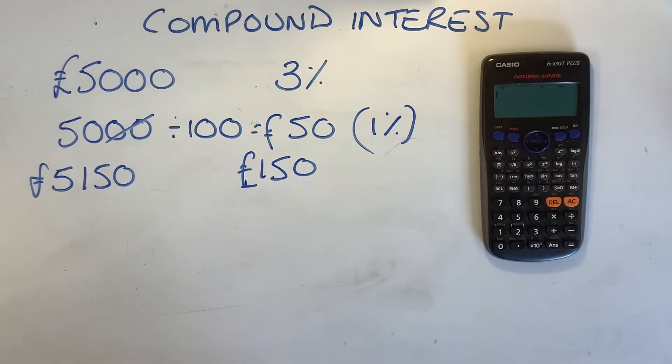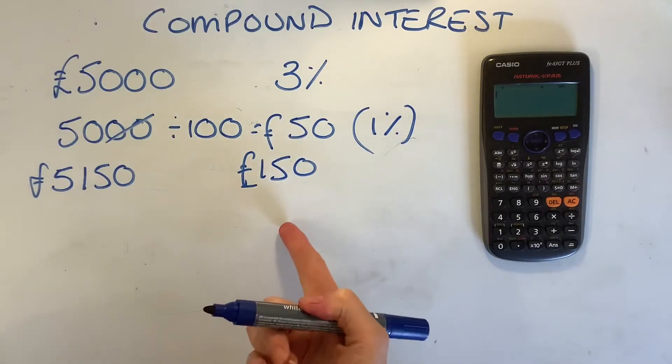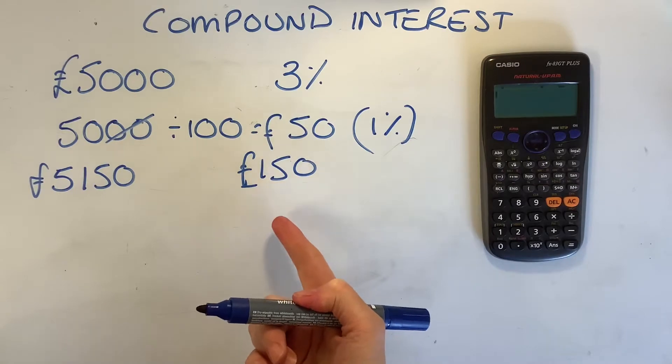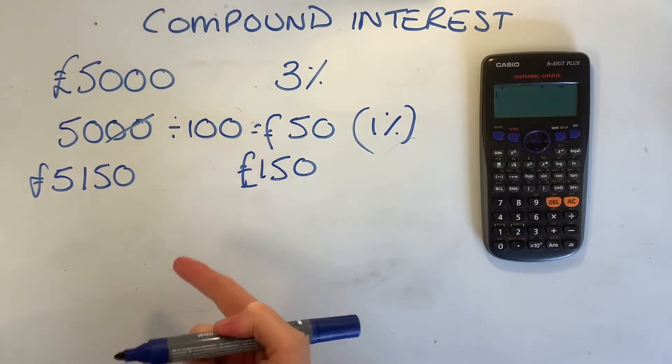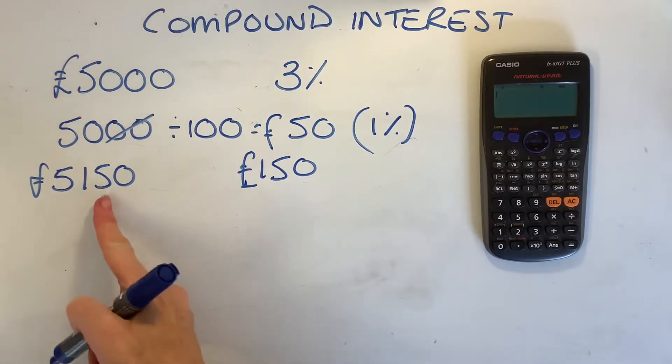It might ask you, though, to give the compound interest for two years. We have to work it out, this method, like we've done here, and then do the same for a second year. I need to find my 3% again. Well, first of all, I find my 1%. So, I divide this by 100.